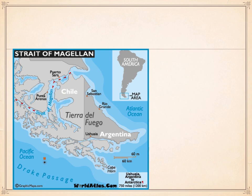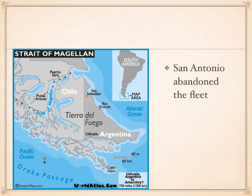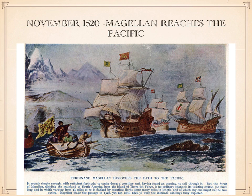Eventually Magellan reached the tip of South America and sailed through the strait — as you can see marked with red dots — between the mainland of South America and an island called Tierra del Fuego, or the Land of Fire. While exploring this strait, the San Antonio deserted and returned to Spain. The other three ships reached the Pacific Ocean in November of 1520, fourteen months after leaving Spain.